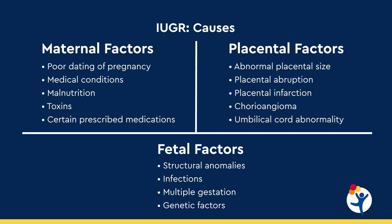Fetal factors include structural abnormalities, congenital infection, multiple gestations such as twins and triplets, and genetic factors that include chromosomal abnormalities or a variety of syndromes. However, genetic factors can also be normal — something we refer to as constitutional smallness — where the parents are simply of short stature.